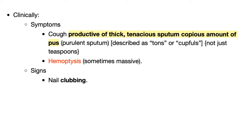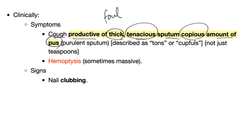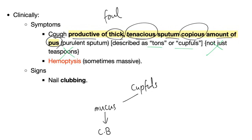Clinically, symptoms and signs. The patient will say: 'I'm coughing lots of gunk — yellowish, purulent, foul-smelling, thick, tenacious, copious amounts.' Not just a teaspoon — cupfuls of pus. Remember: cupfuls of mucus suggests chronic bronchitis, while cupfuls of purulent sputum suggests bronchiectasis. The patient may also have hemoptysis, sometimes massive. The most common cause of hemoptysis, however, is chronic bronchitis.